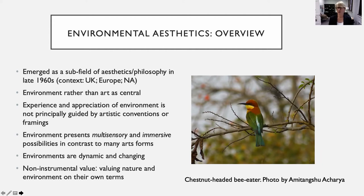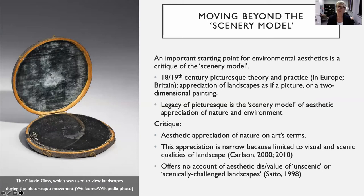Aesthetics is really about the senses, but it's also about emotion, knowledge, imagination, creativity, and different kinds of meanings. Looking at a photograph of a chestnut-headed bee-eater — if we are fortunate enough to live in or travel through India, we may hear it singing, see its lovely colors and form. That is an aesthetic experience. It may be a transient experience — the bee-eater may be there for a few moments and then fly away. One of the really important starting points for environmental aesthetics has been moving beyond the scenery model.